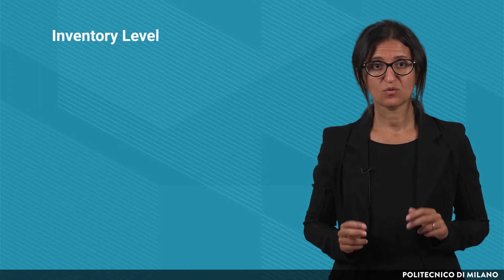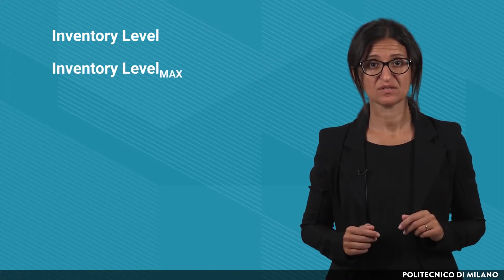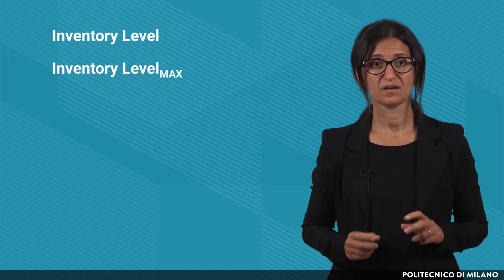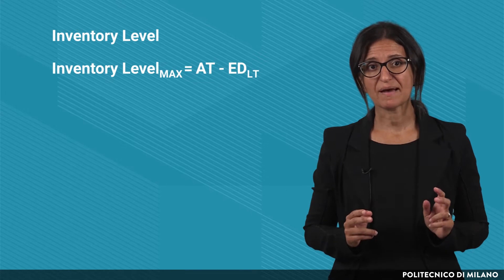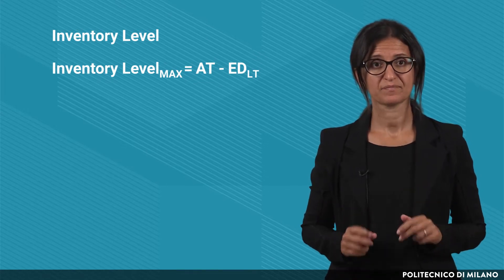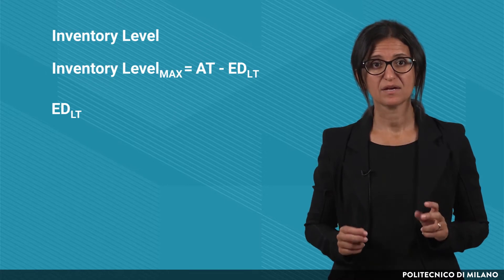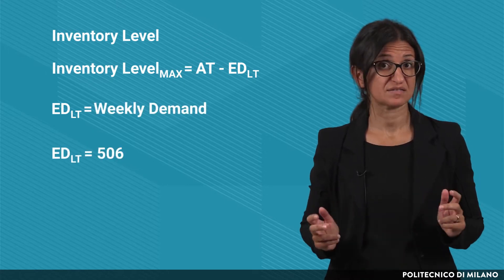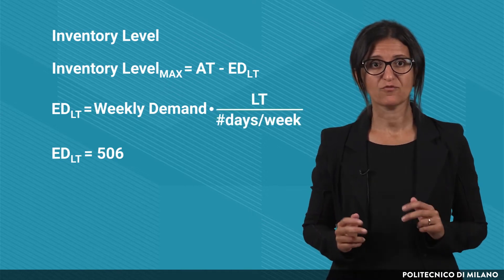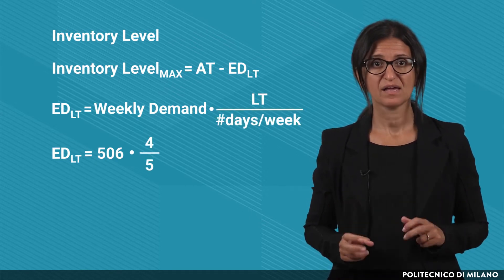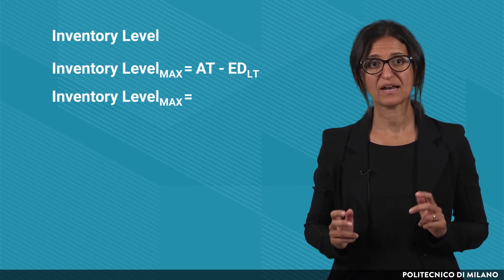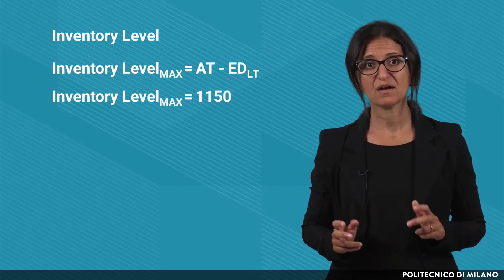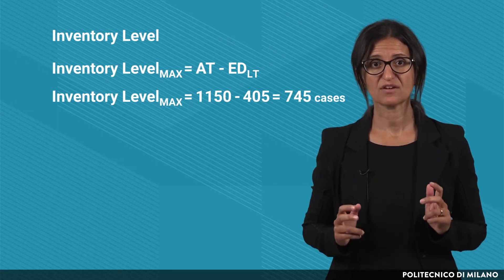As for the inventory level, we have the maximum value when the order is received — that is when the replenishment lead time, 4 days, has passed from the order. So it can be calculated as the difference between the availability target and the expected demand during the lead time. The expected demand during the lead time is found as the weekly demand, 506 cases, multiplied by the lead time, 4 days, divided by 5 days per week, resulting in 405 cases. Therefore, the maximum inventory level is 1150 minus 405, and so 745 cases.